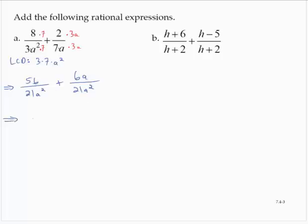Adding the fractions, I would have 56 plus 6a over 21a square.